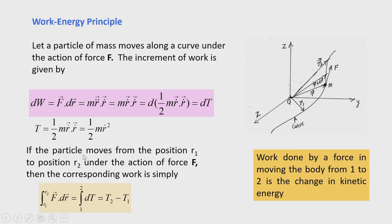If the particle moves from position r1 to r2 under force f, the corresponding work is found by integrating this expression. After integrating dW, we find the work done in moving from position 1 to position 2, which equals the change in kinetic energy. So the integral of f·dr from r1 to r2 yields T2 minus T1 — that is, the change in kinetic energy equals the work done.